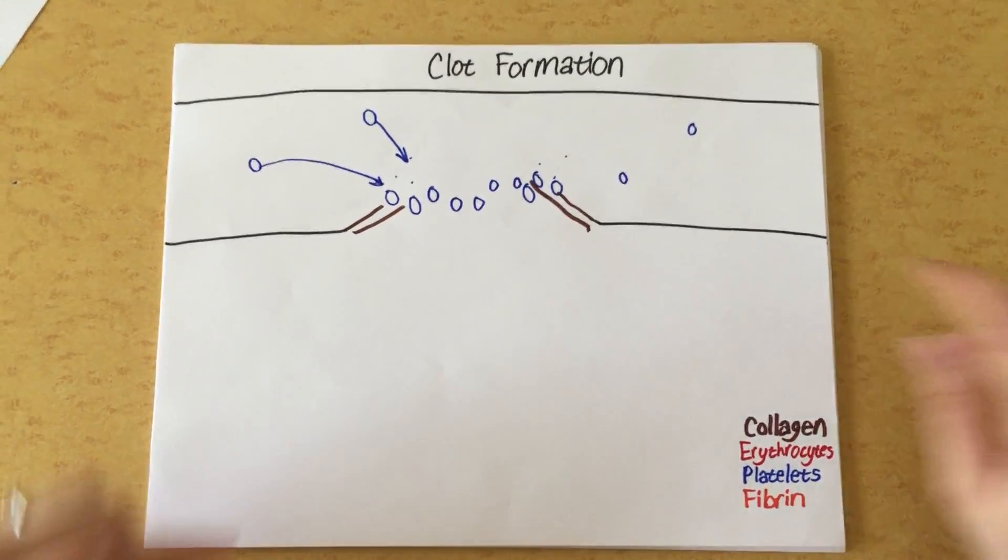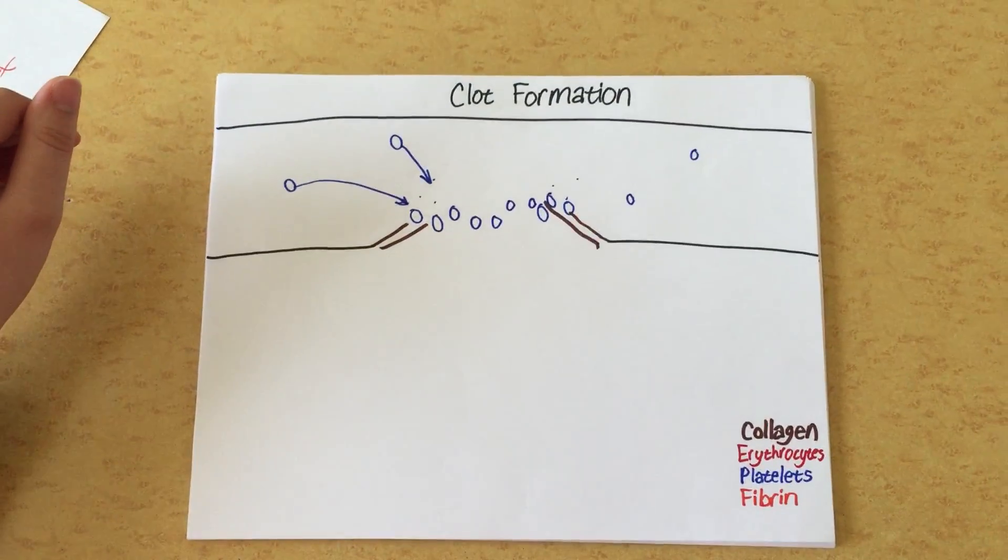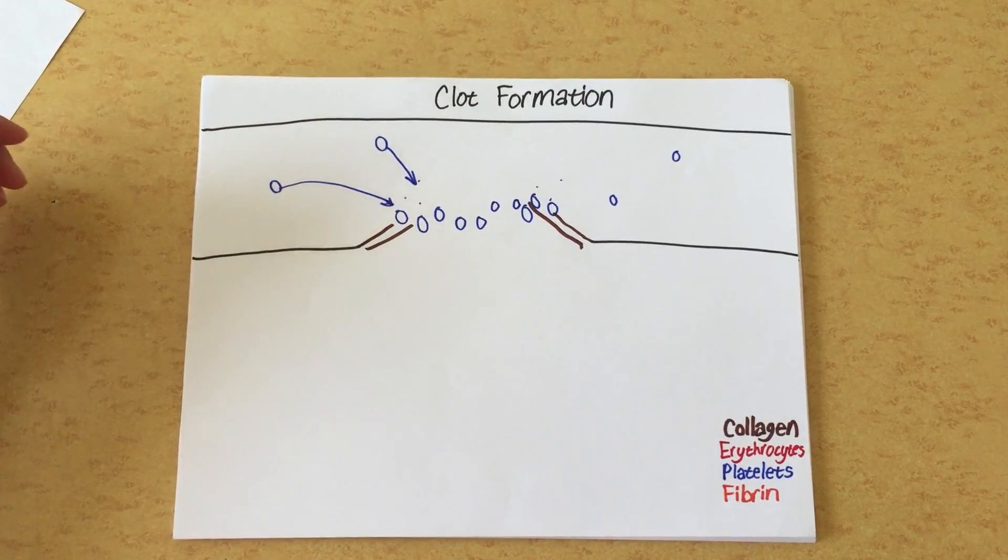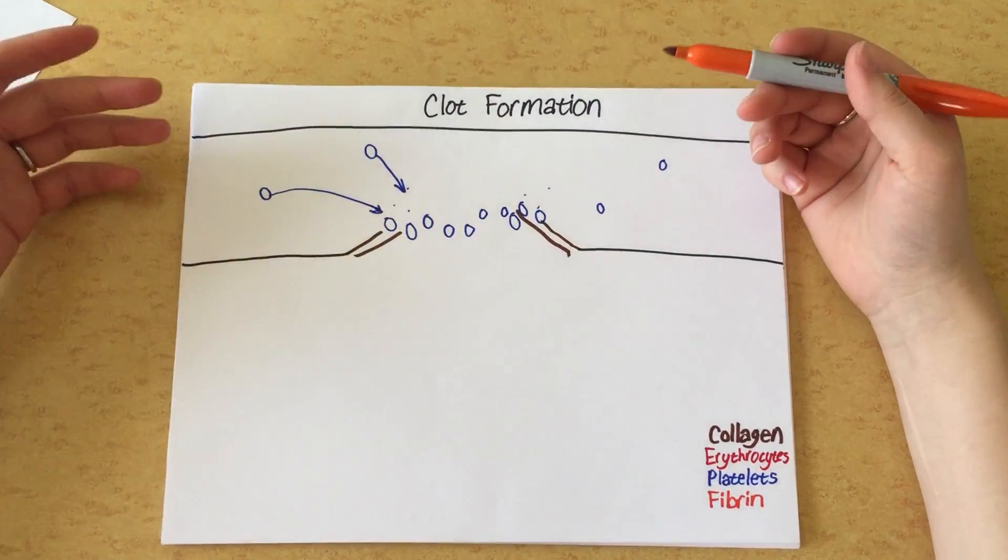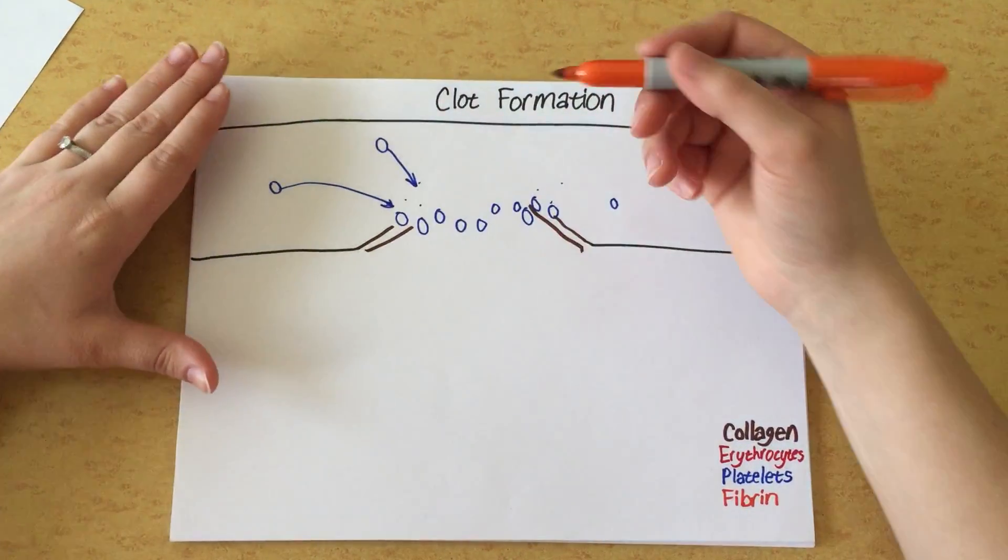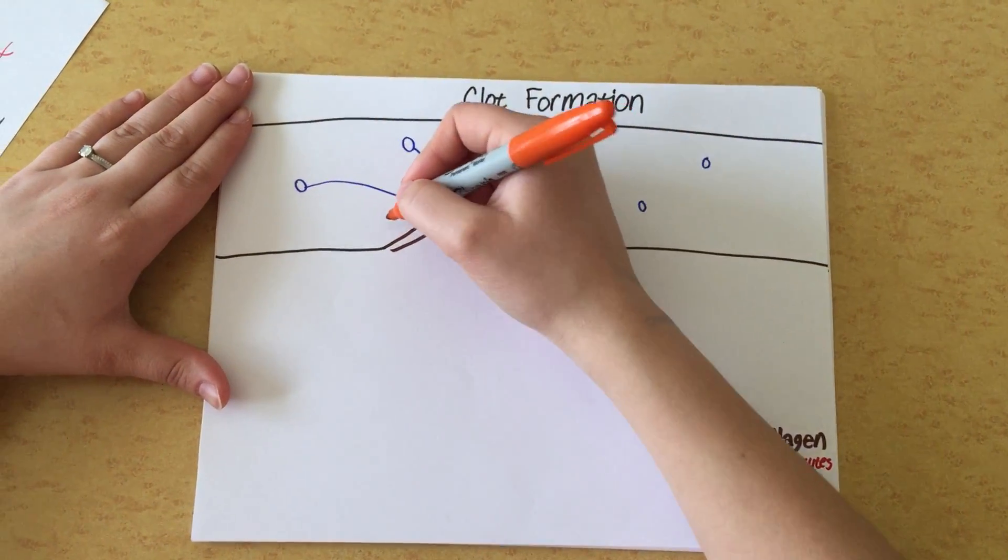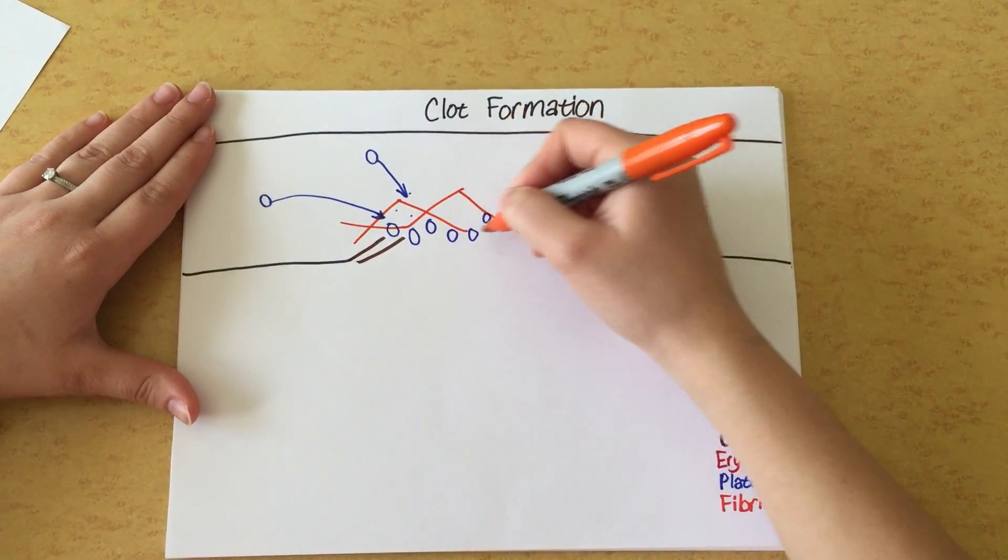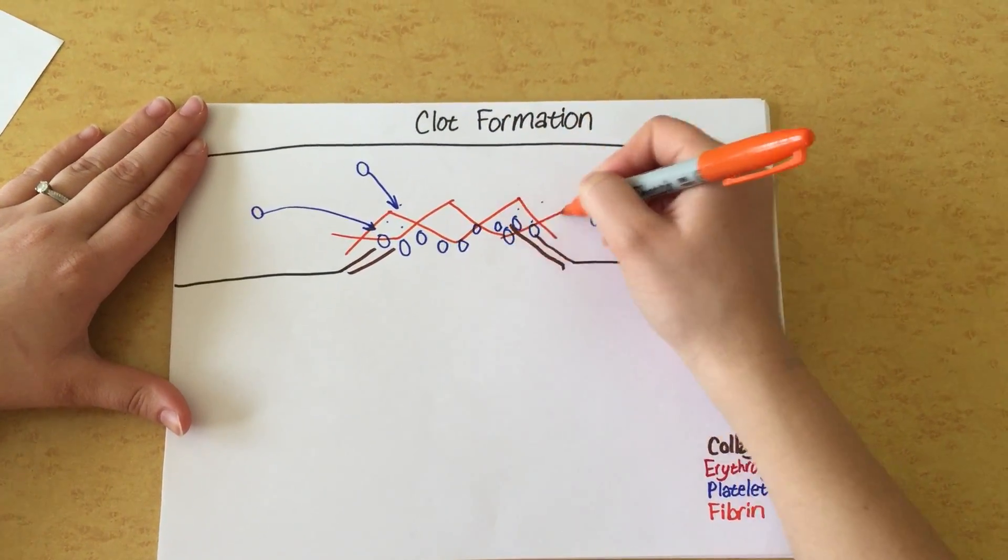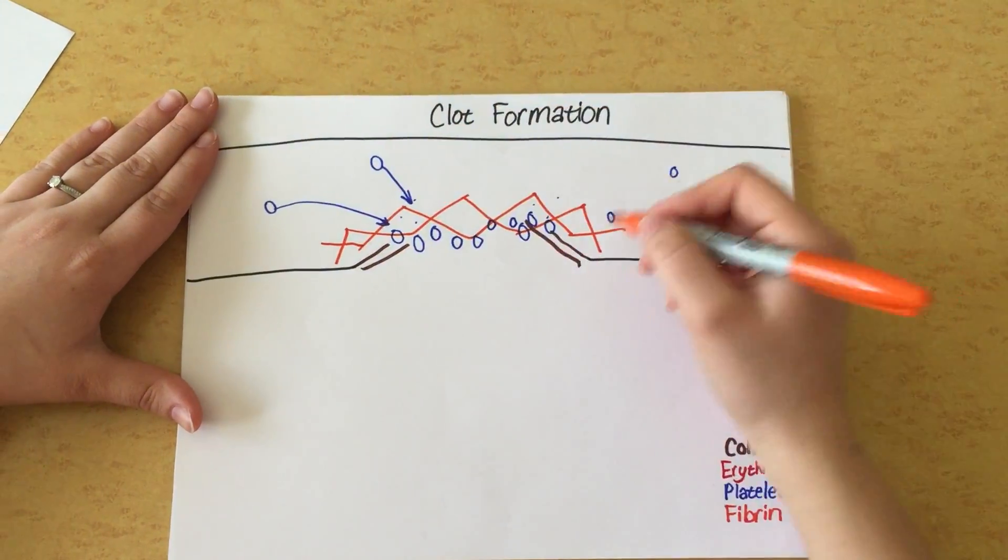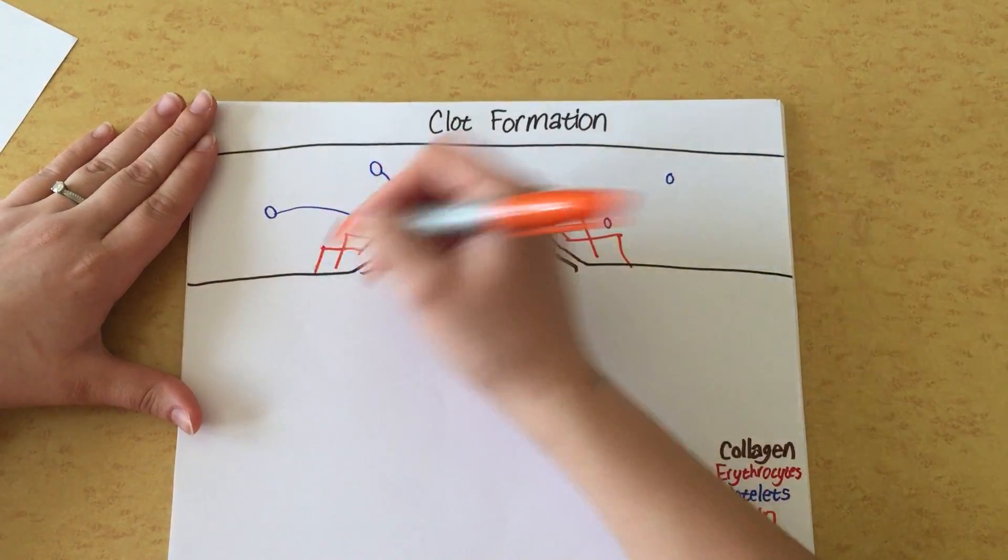Now when the platelets are all clotted together here, they will also attract fibrin. Now fibrin is the activated form of fibrinogen, that was one of the proteins that was found in plasma. Fibrinogen comes in and forms this big network over this area. So we'll just have fibrin, the activated fibrinogen which is called fibrin, here in orange.